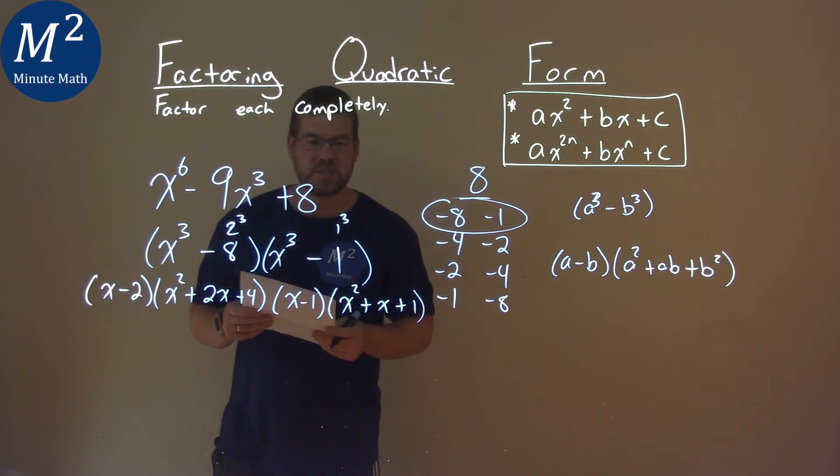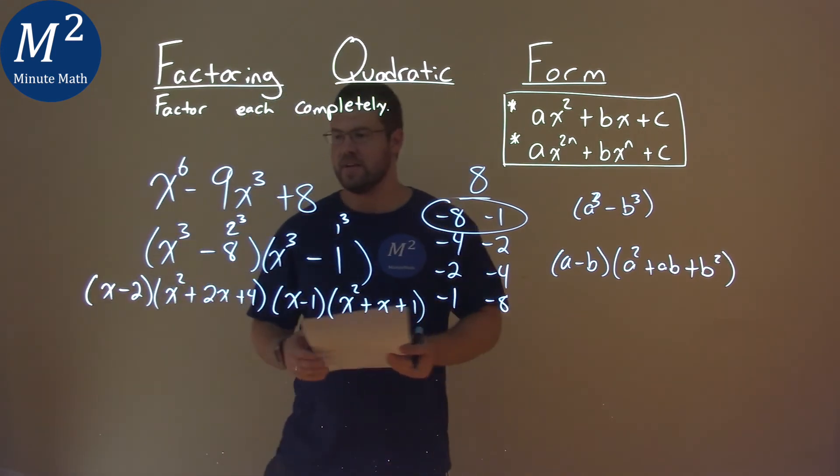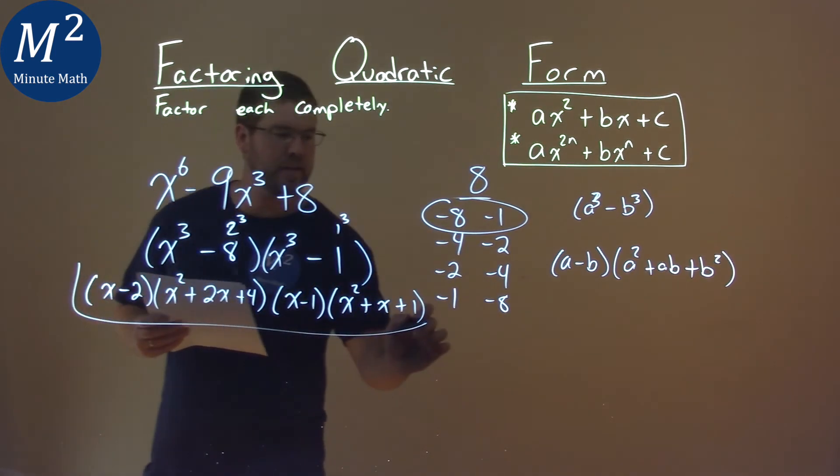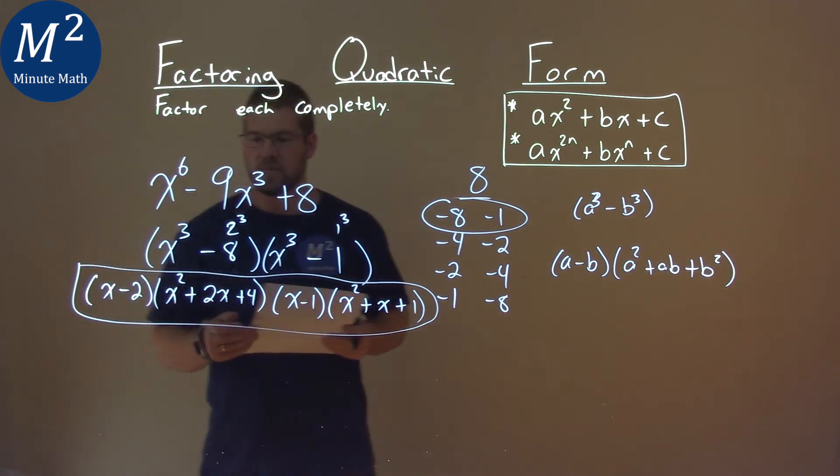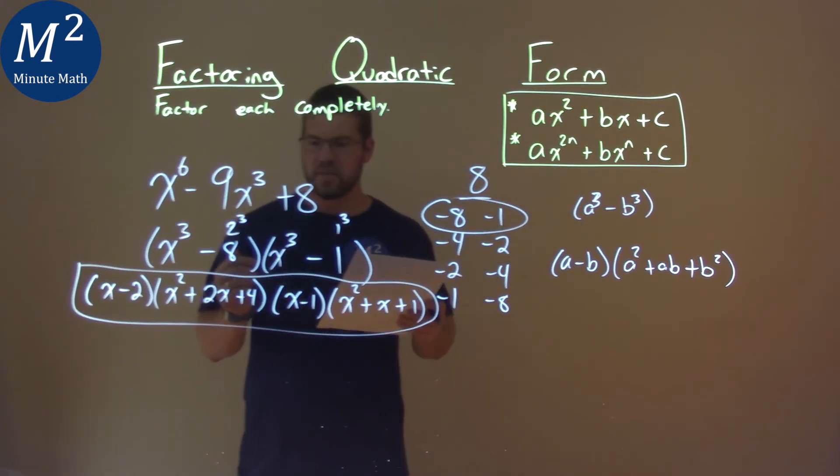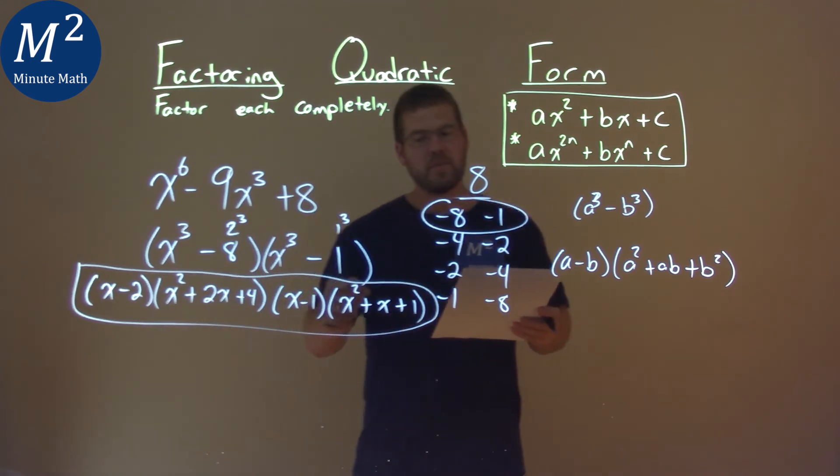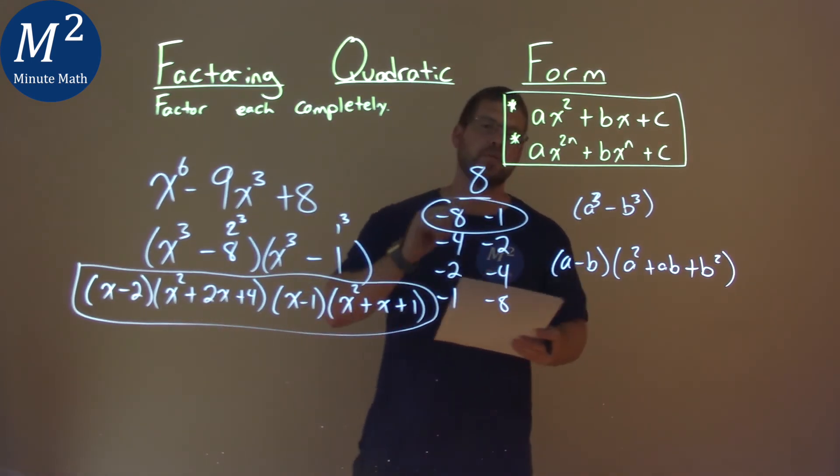And that's actually it, folks. Our final answer here is going to be, if I can highlight it here for you, so you can see it: x minus 2 times x squared plus 2x plus 4, times x minus 1, times x squared plus x plus 1.